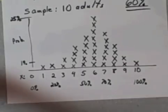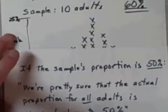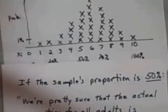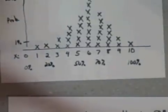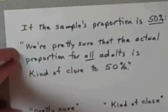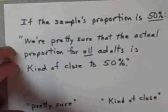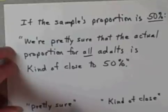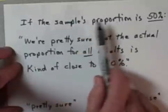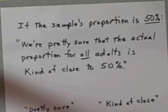Now let's move on. Let's say we actually go out and get one sample of ten people, we question them, and it turns out that exactly five out of those ten say yes, they're going to go see a movie sometime in the next ten days. So that sample's proportion would be five out of ten, or fifty percent.